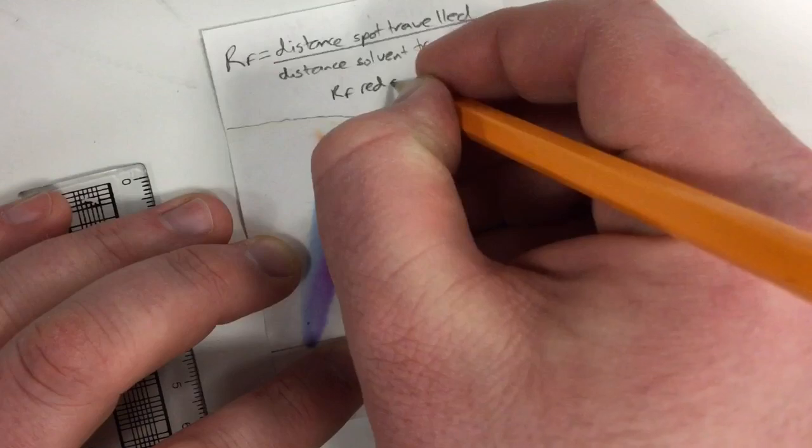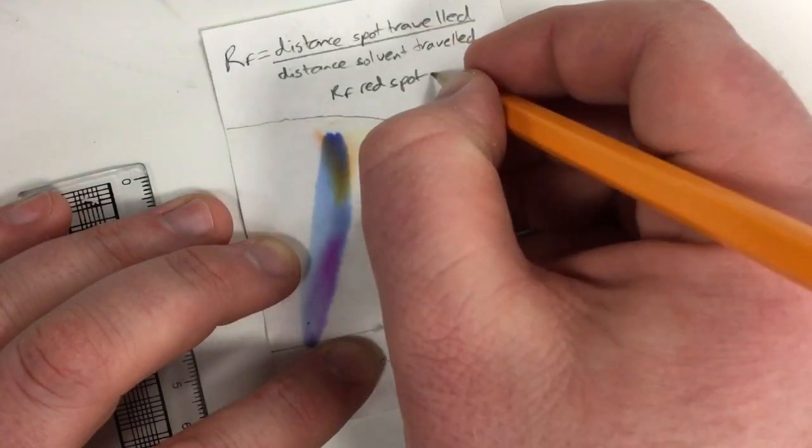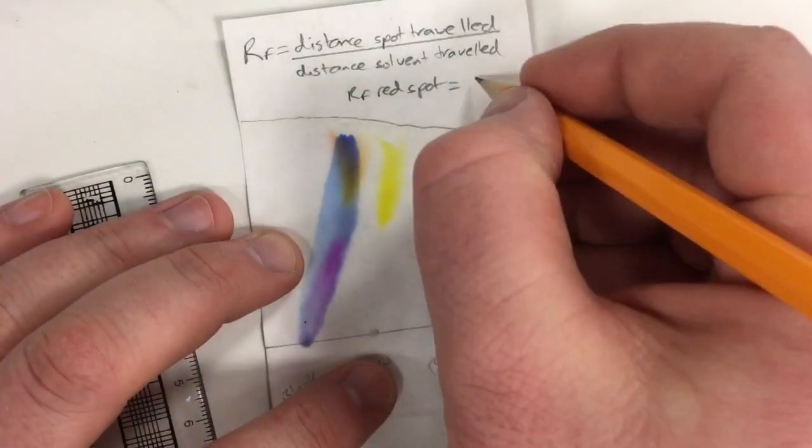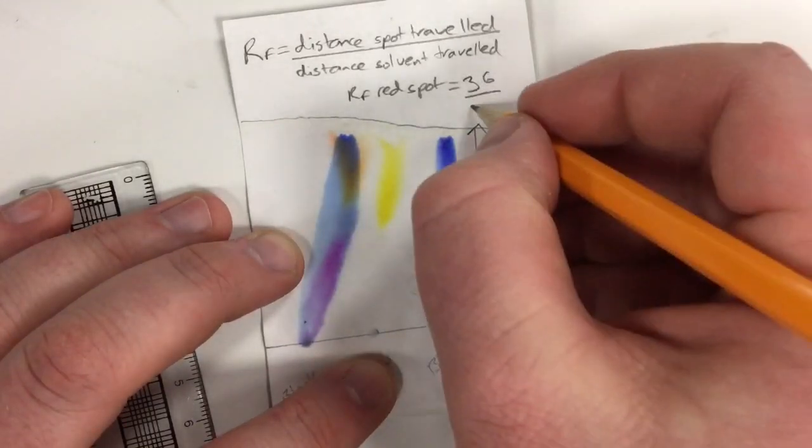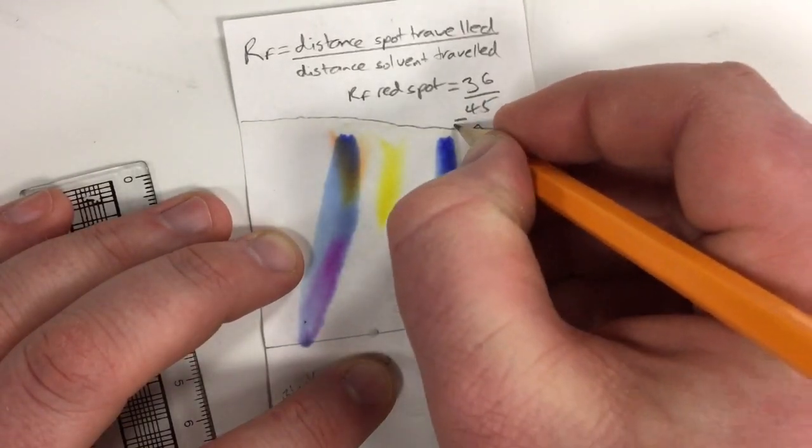With our values determined these can then be used to calculate the RF value for a particular spot. These can then be compared against a reference spot or other spots in the chromatogram sample.